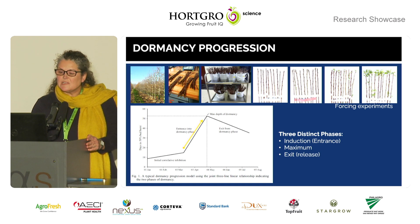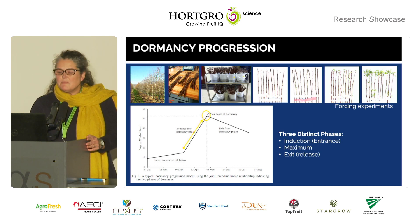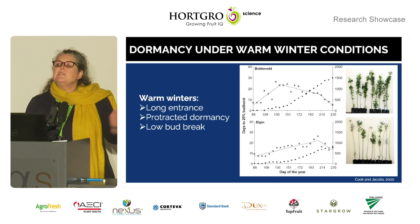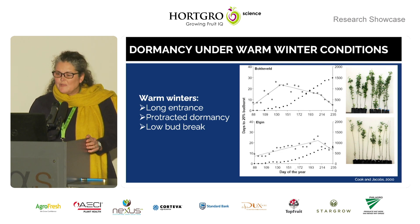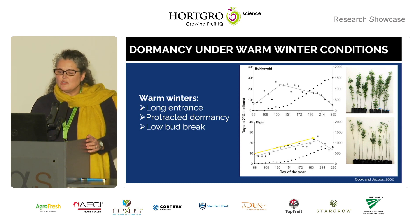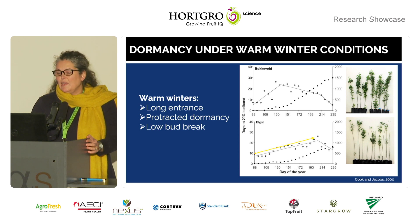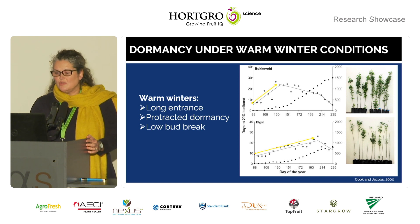The three phases are: the induction or entrance into dormancy, when it hits maximum dormancy, and then once it has received a sufficient amount of chill, it starts to release from dormancy — the exit from dormancy. From previous research by Cook and Jacobs, we know that this dormancy progression curve happens quite differently in warm winter conditions. In warm winters, we see a protracted, longer entrance into dormancy, which results in low bud break, compared to the shorter entrance into dormancy seen in the Korobockefeld area, which results in higher bud break.